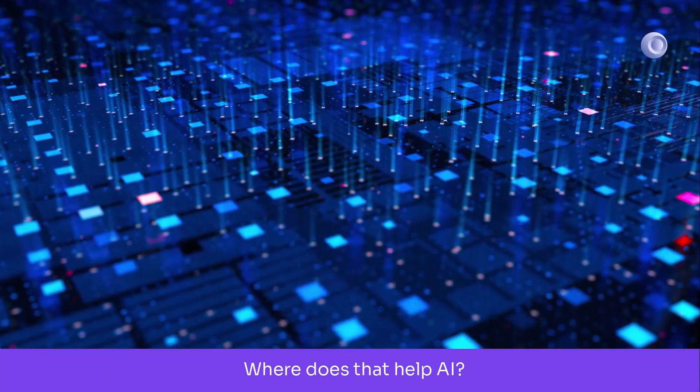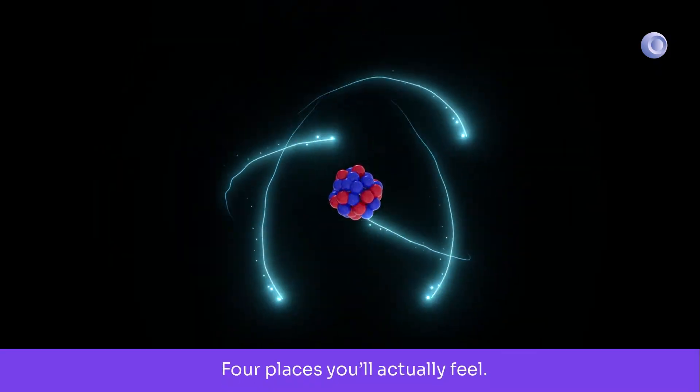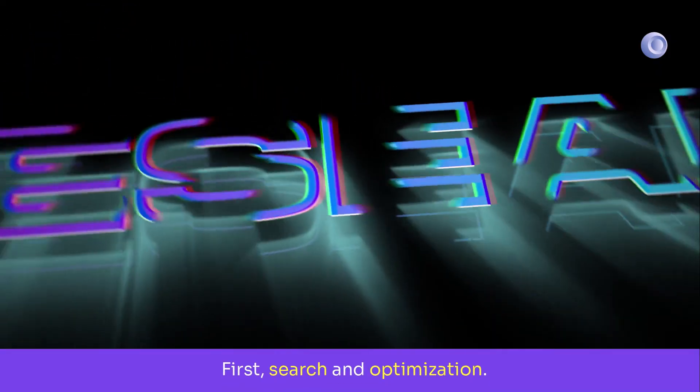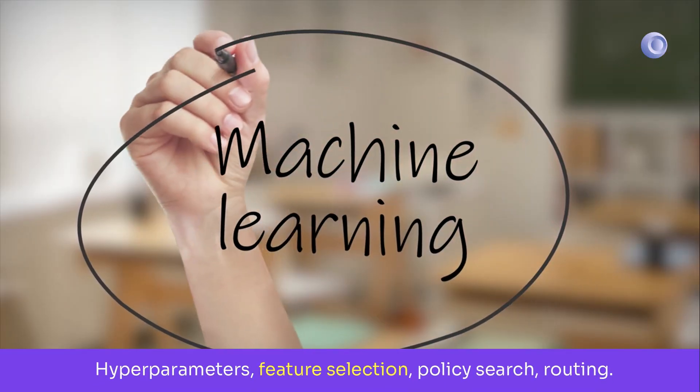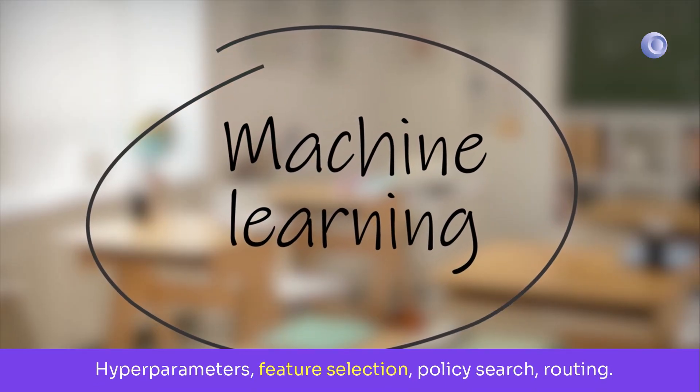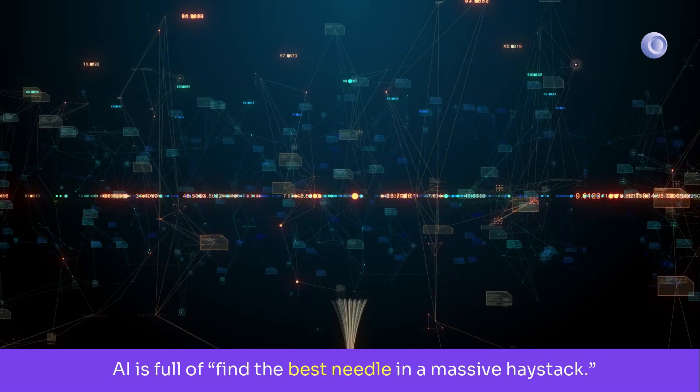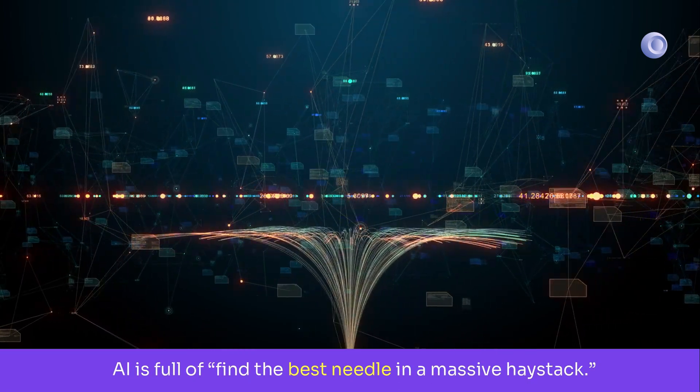Where does that help AI? Four places you'll actually feel. First, search and optimization. Hyper parameters, feature selection, policy search, routing. AI is full of find the best needle in a massive haystack.